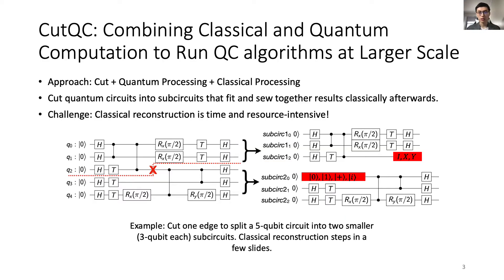Our approach, called CutQC, cuts a quantum circuit, then combines quantum processing and classical processing to run QC algorithms at a larger scale. Essentially, we first cut large quantum circuits into smaller sub-circuits that fit on small quantum computers. Use the quantum computers to evaluate the small sub-circuits. We eventually sew together the results using classical computing. The figure here shows an example of making one cut to split a 5 qubit circuit into two 3 qubit sub-circuits. Instead of requiring a 5 qubit QC, we now only need a 3 qubit QC. The classical reconstruction steps are in a few slides. The challenge here is that classical reconstruction is time and resource intensive.